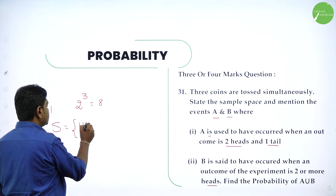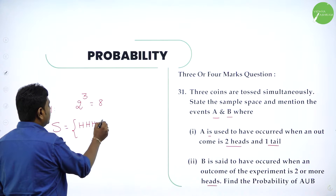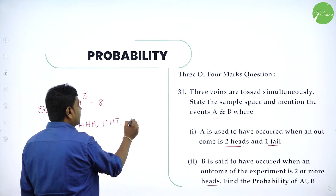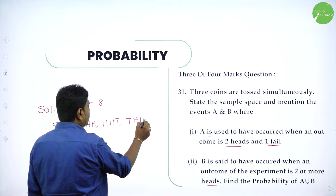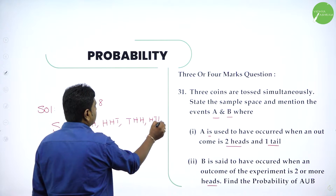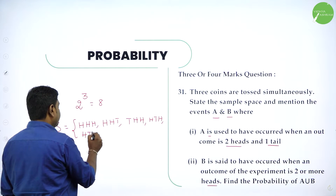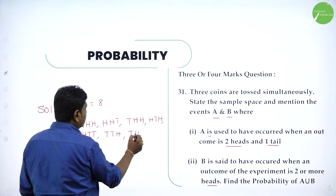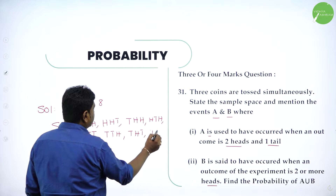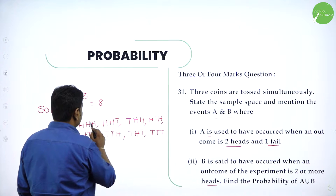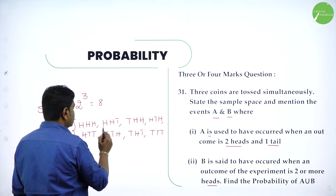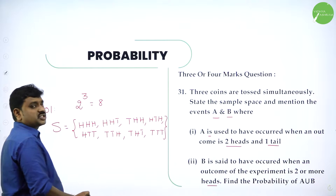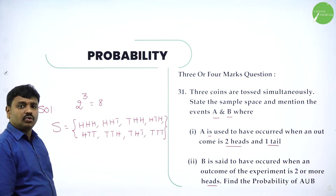What are the 8 outputs? All 3 heads, or any 1 tail: HHT, THH, HTH. Or any 2 tails: HTT, THT, TTH. Or all 3 tails: TTT. So 1, 2, 3, 4, 5, 6, 7, 8 — 8 outputs are there. This is the sample space — the set of all possible outcomes.